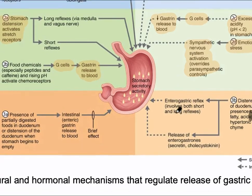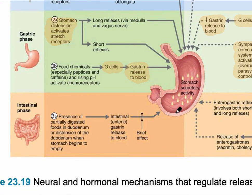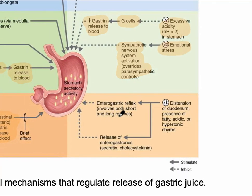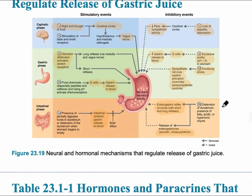The intestinal phase is due to what's present in the duodenum. If there are partially digested foods in the duodenum, this stimulates the intestinal phase, causing enterogastrin to be released into the blood. The inhibitory effect comes from secretin and cholecystokinin, basically causing a pause — telling the stomach not to send any more chyme to the small intestine until it has been fully absorbed.